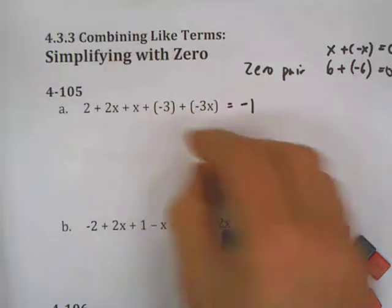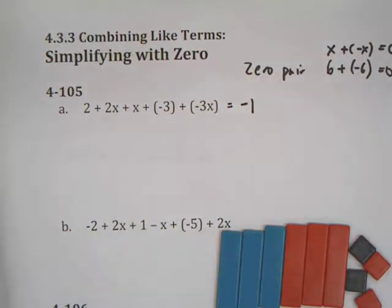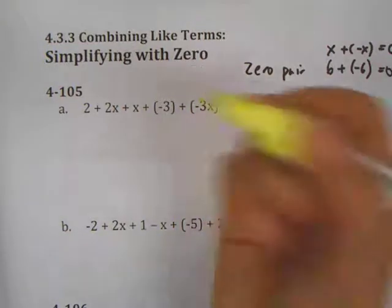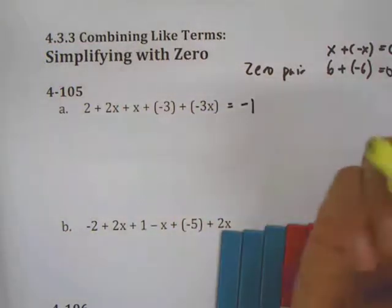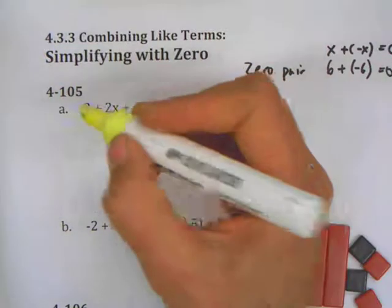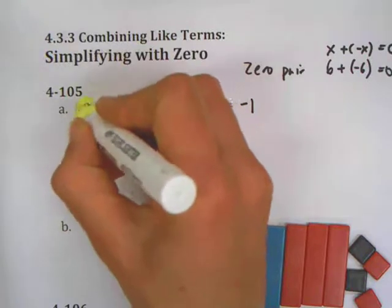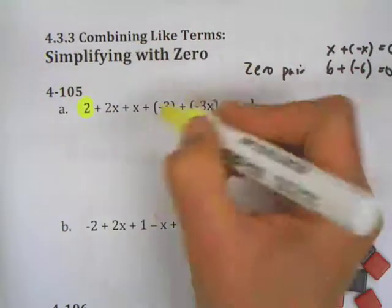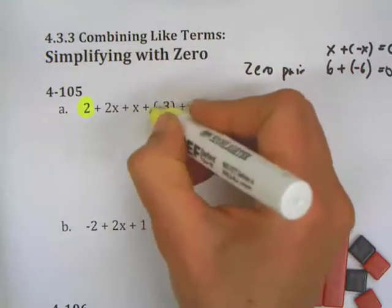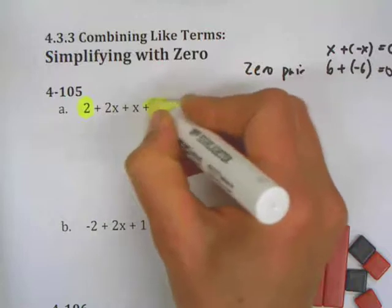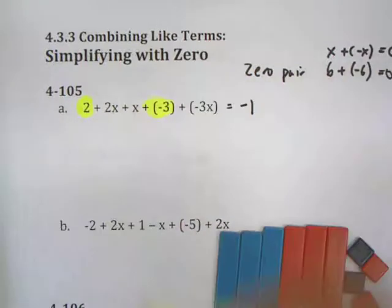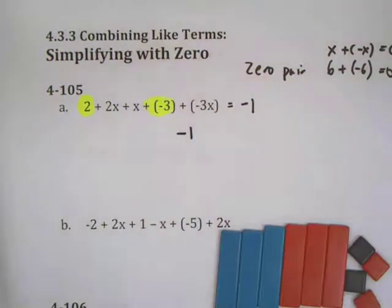You're not always going to have the benefit of algebra tiles, so I'm going to teach a couple of other strategies. I like to use colored pencils or highlighters. I think about collecting like terms — so here's a two, and the other constants are plus negative three. Two plus negative three is equal to negative one.